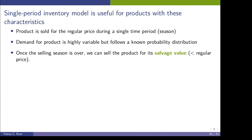And once the selling season is over — when we are off season — we can still sell the product. However, the price we can charge is only equal to its salvage value. That means this is a value where we can have a kind of fire sale for the product, or when we really have to get rid of it and charge a very low price. Sometimes the salvage value can also be negative, meaning we have to pay in order to get rid of the product. But in all cases, the salvage value is smaller than the regular price.